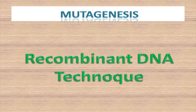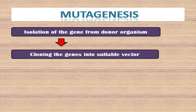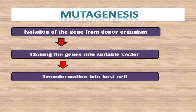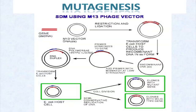Recombinant DNA techniques involve: isolation of a gene from a donor organism, cloning it into a vector, transforming the vector into a host cell, and after cultivating the host cell, detection of DNA from the host cell is done as a confirmation step. Here is a diagram showing recombinant DNA techniques.